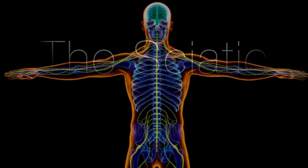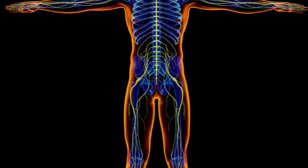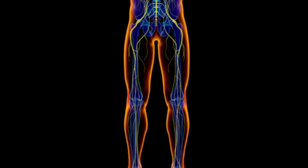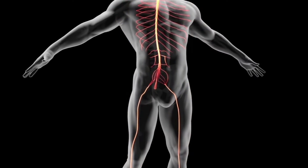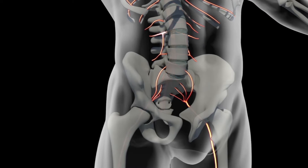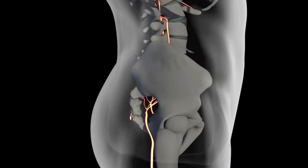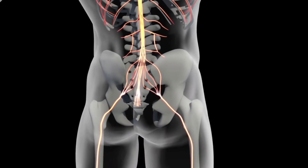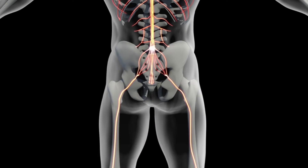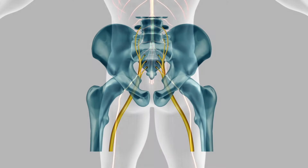The sciatic nerve is the longest and thickest nerve in the body. This major nerve extends from the lower end of the spinal cord and runs all the way down the leg. It is made up of five root nerves which connect to the spine — two of these nerves connect with the lumbar spine and three to the sacrum.